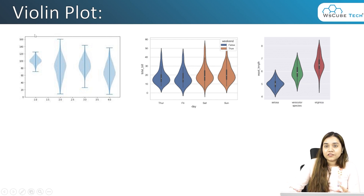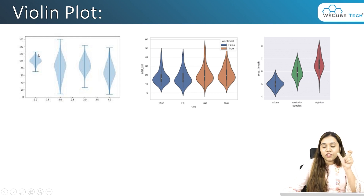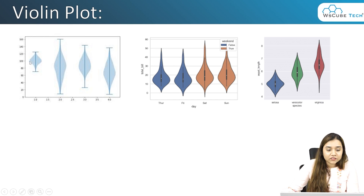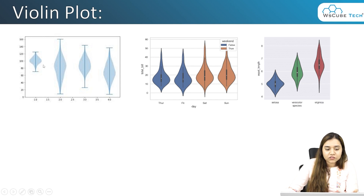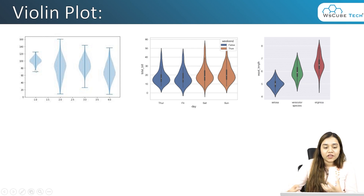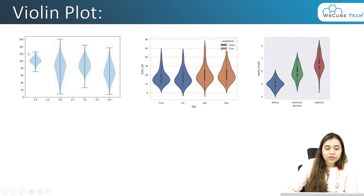How to read a violin plot is very simple — wherever the thickness is more, the density of data is more at that place. So basically, the density of data is more in the range of, let's say, 90 to 110, which is why the thickness over here is more. The range can be defined by the whiskers — that's where the range of the whiskers extends to.